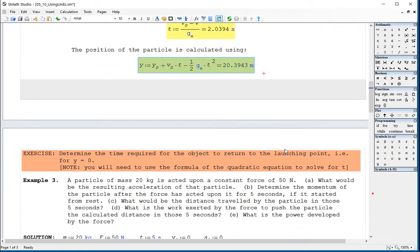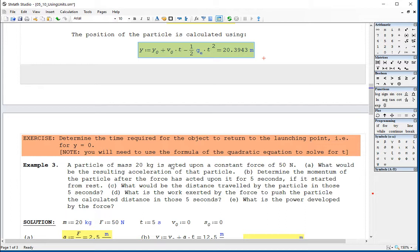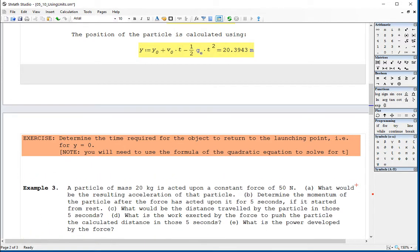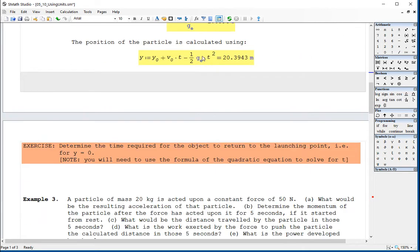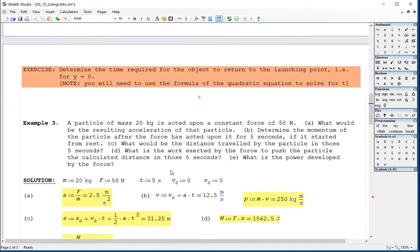Okay, there's an exercise here to determine the time required for the object to return to the launching point, that is for Y equals zero. Well, to give you an idea, we have this equation right here that determines the position. And so if you know Y sub zero, which is equal to zero, to return to the point of launch Y should be equal to Y sub zero, which means you have a quadratic equation on T. And so use the quadratic equation or use solve to obtain that result.